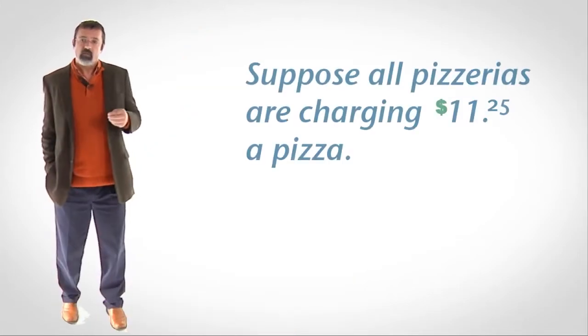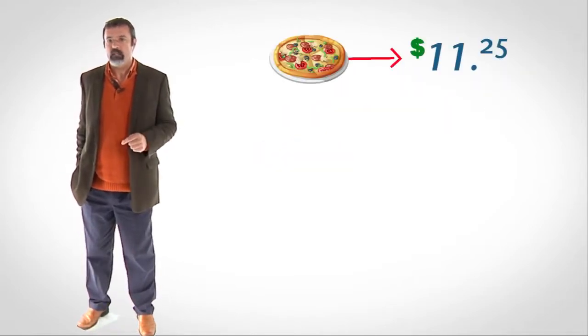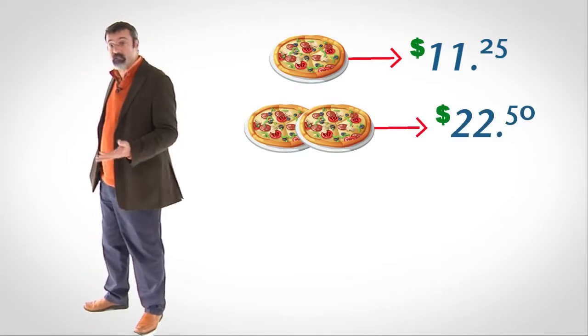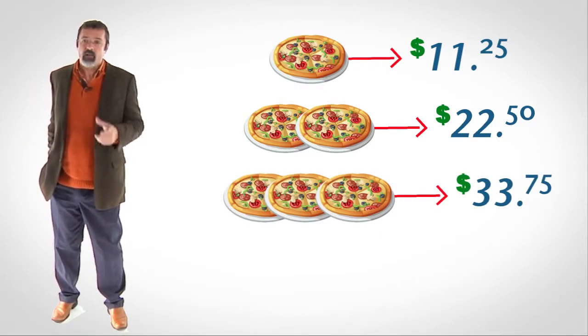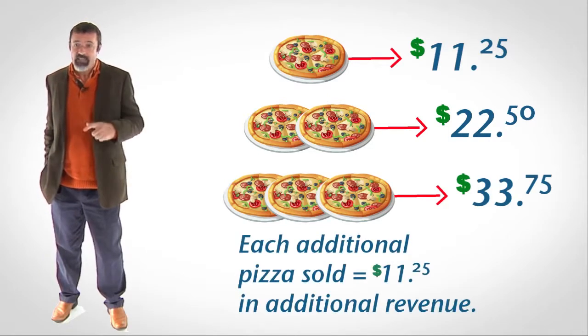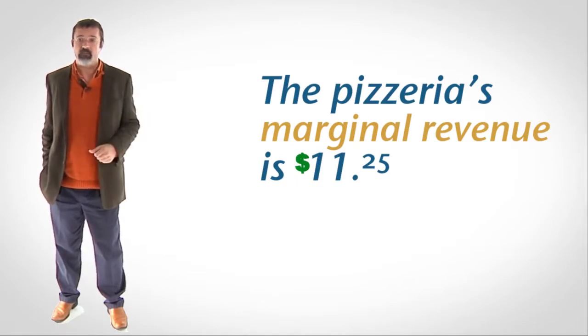As a price taker, the pizzeria doesn't have to make any pricing decisions. It simply charges the same price as its competitors, no more and no less. Suppose all the pizzerias are charging $11.25 a pizza. Each additional pizza brings in an additional $11.25 in revenue — the pizzeria's marginal revenue is $11.25. Since profit-maximizing output occurs where marginal revenue and marginal cost are equal, we can look for the output level at which the pizzeria's marginal cost is also $11.25. That is the pizzeria's profit-maximizing output level.